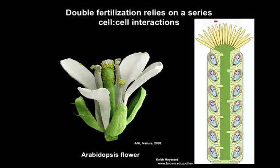The pollinated pistil is a system that integrates hundreds of individual cell-cell interactions to achieve maximal seed production. It's a beautiful system for the study of the basic mechanisms of intercellular communication, and it's imperative that we learn as much as possible about the molecular basis of seed production so we can meet the demands of a growing population in a changing climate.